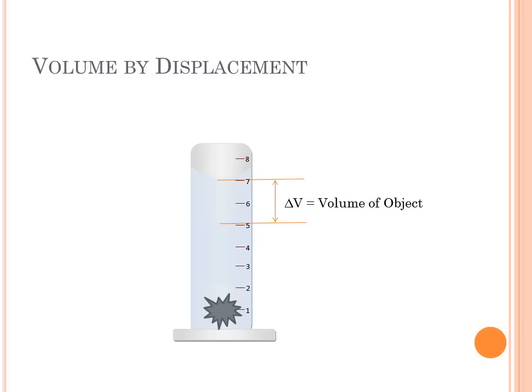That difference in volume is the volume of the object. In this case, if we estimate off of this graduated cylinder, which is certainly not quantitative, we can show that we've got about 7 milliliters up there at the top.